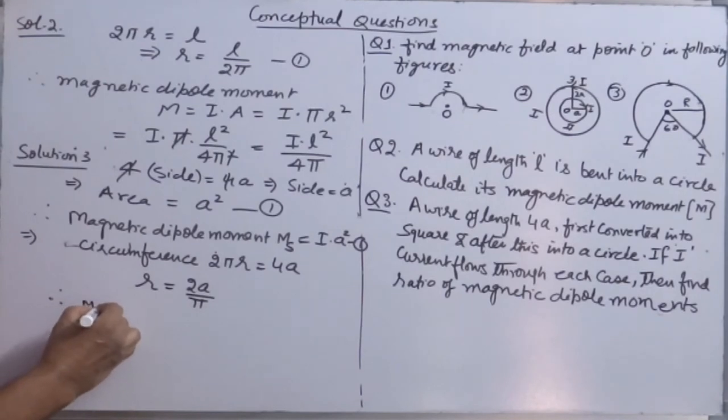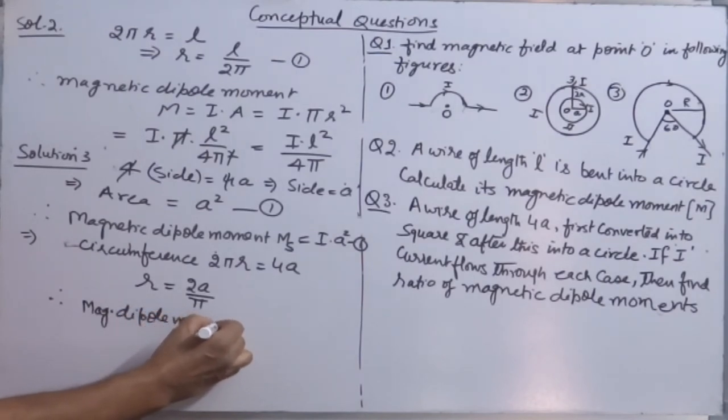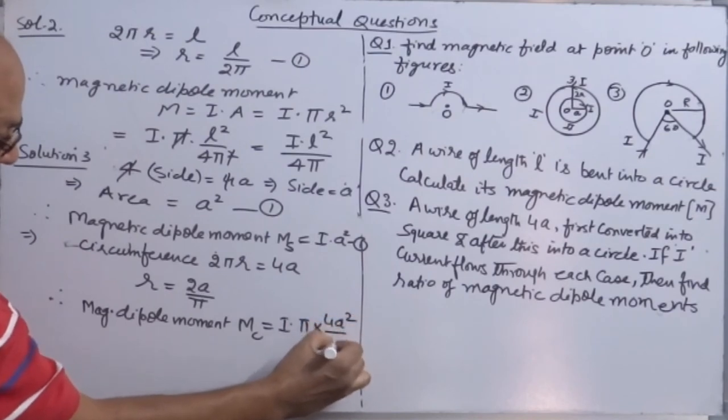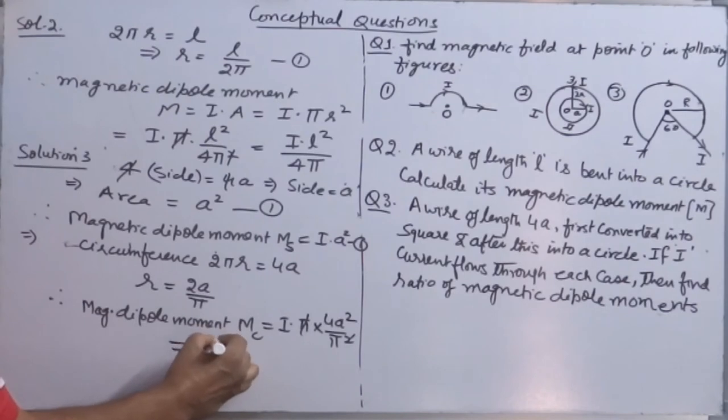Therefore, magnetic dipole moment in the circle M_c = I × πR² = I × π × 4A²/π² = 4IA²/π. This you can give as equation 2.